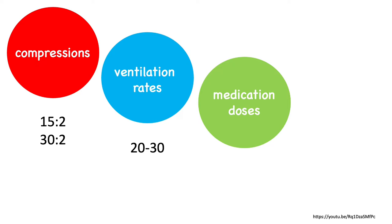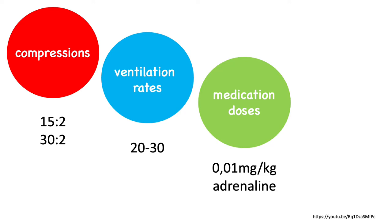The dosing of medication is also different for kids. For example, the dose of adrenaline for any adult in a resuscitation is one milligram, regardless of their weight. But in a child, we'll use a dose of 0.01 milligram per kg of adrenaline. This points to the importance of using correct doses for kids, because medication doses for children are based on weight.